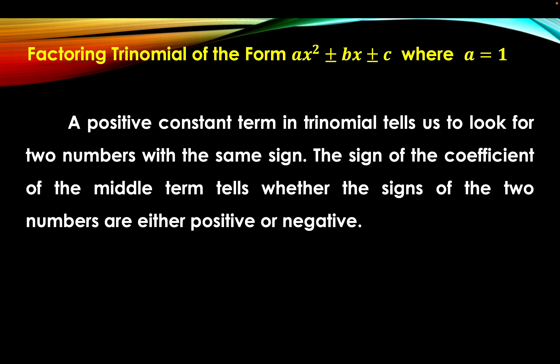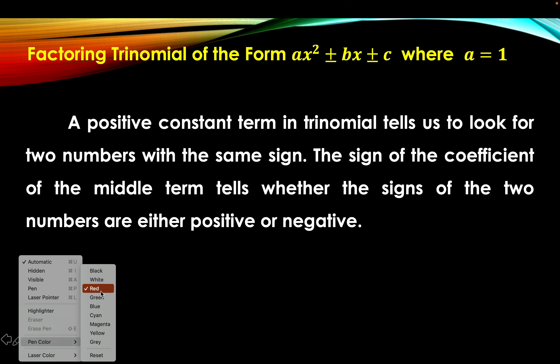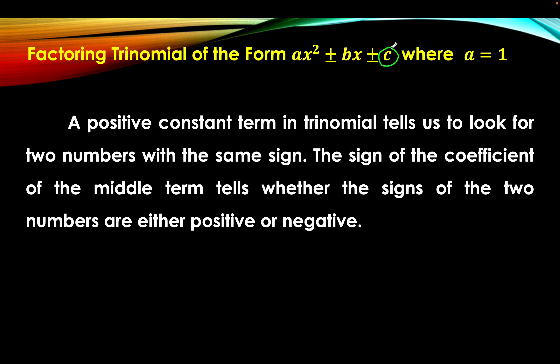it is important to remember that a positive constant term, denoted by c, tells us to look for two numbers with the same sign. And the sign of the coefficient of the middle term, denoted by b, tells whether the signs of the two numbers are either positive or negative. To guide us in factoring general trinomials, let's remember the following key steps.